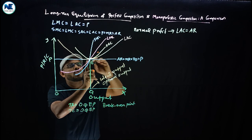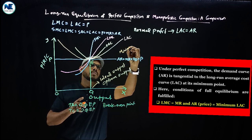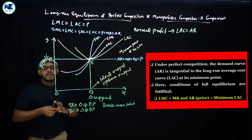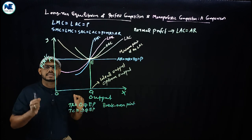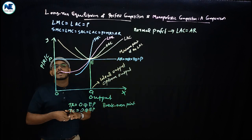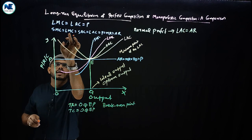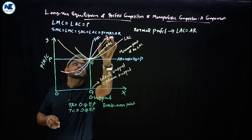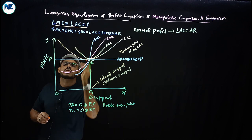The firm produces at the minimum point of the long-run average cost. This ensures productive efficiency under perfect competition's long-run equilibrium. That is the key point: the firm is producing at the minimum point of the long-run average cost. At equilibrium, short-run marginal cost equals long-run marginal cost, equals short-run average cost, equals long-run average cost, which equals price, which equals marginal revenue and average revenue.